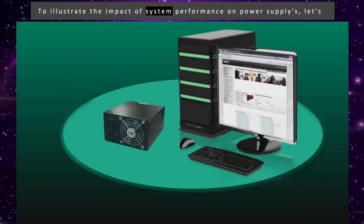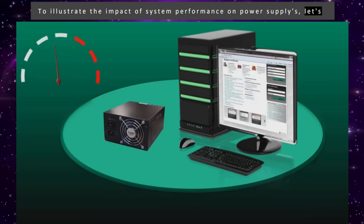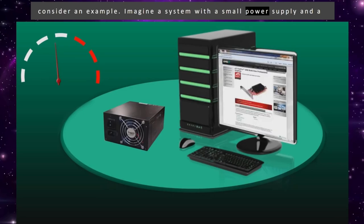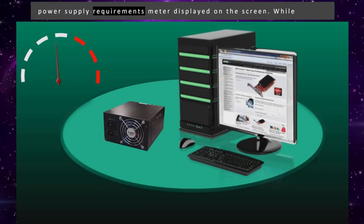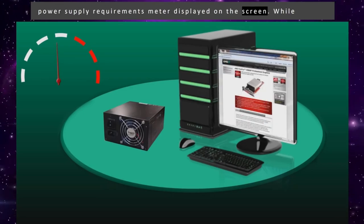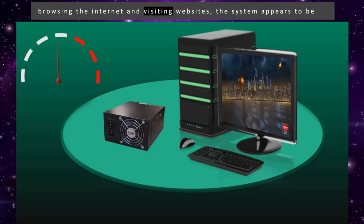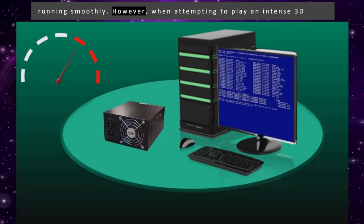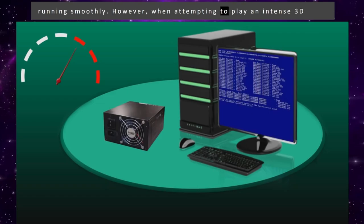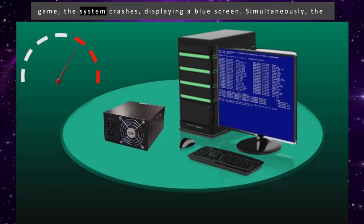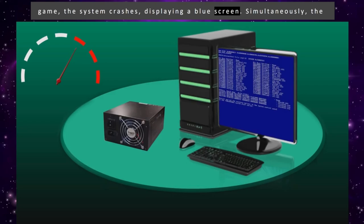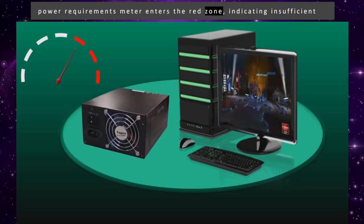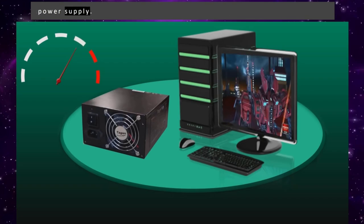To illustrate the impact of system performance on power supplies, let's consider an example. Imagine a system with a small power supply and a power supply requirements meter displayed on the screen. While browsing the internet and visiting websites, the system appears to be running smoothly. However, when attempting to play an intense 3D game, the system crashes, displaying a blue screen. Simultaneously, the power requirements meter enters the red zone, indicating insufficient power supply.